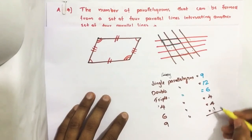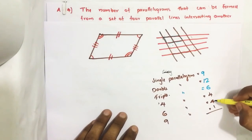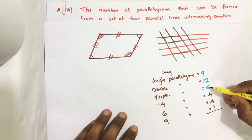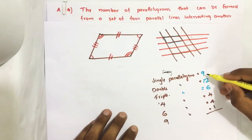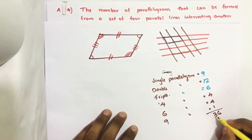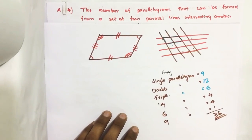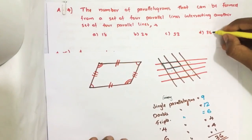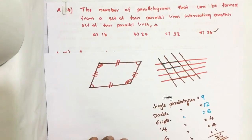So total, 9 plus 12 is 21, plus 6 is 27, plus 4 is 31, plus 4 is 35, plus 1 is 36. 36 such parallelograms are there. So we get the answer as 36. Thank you.